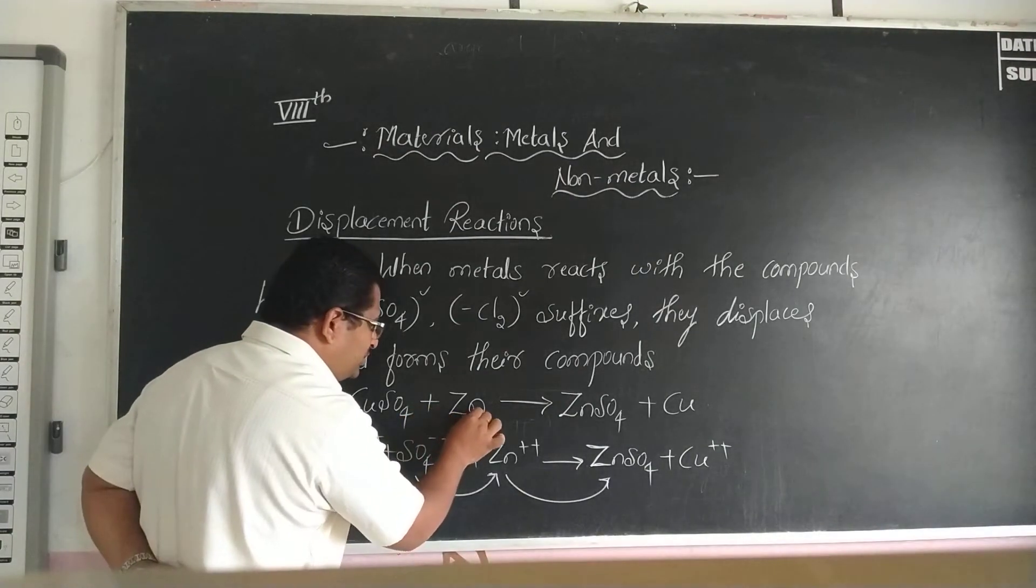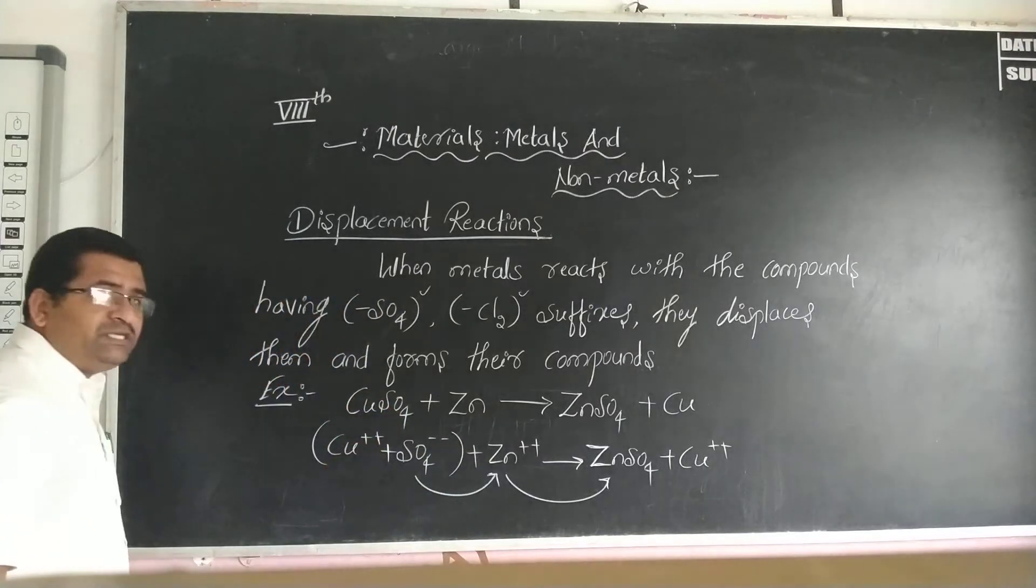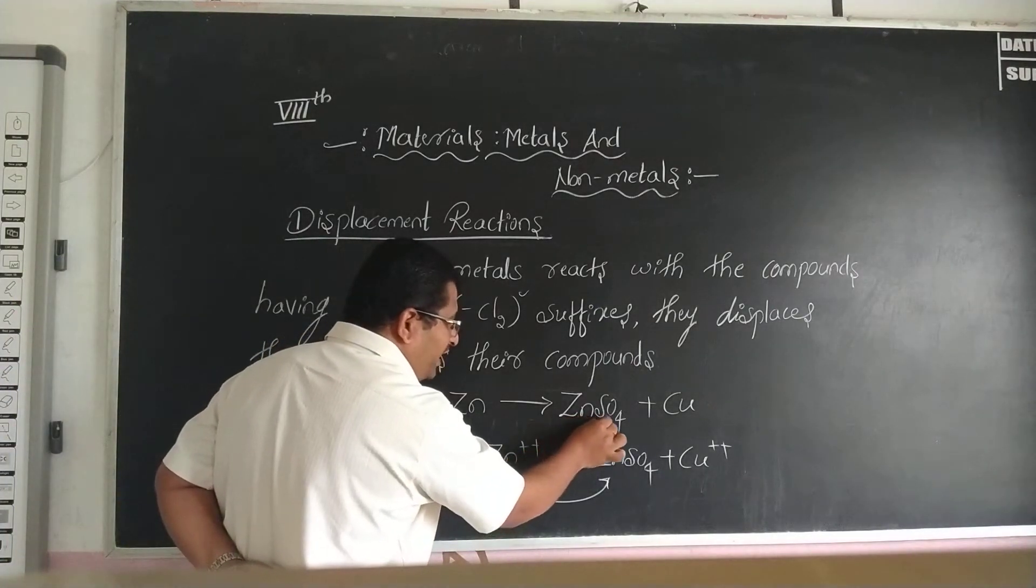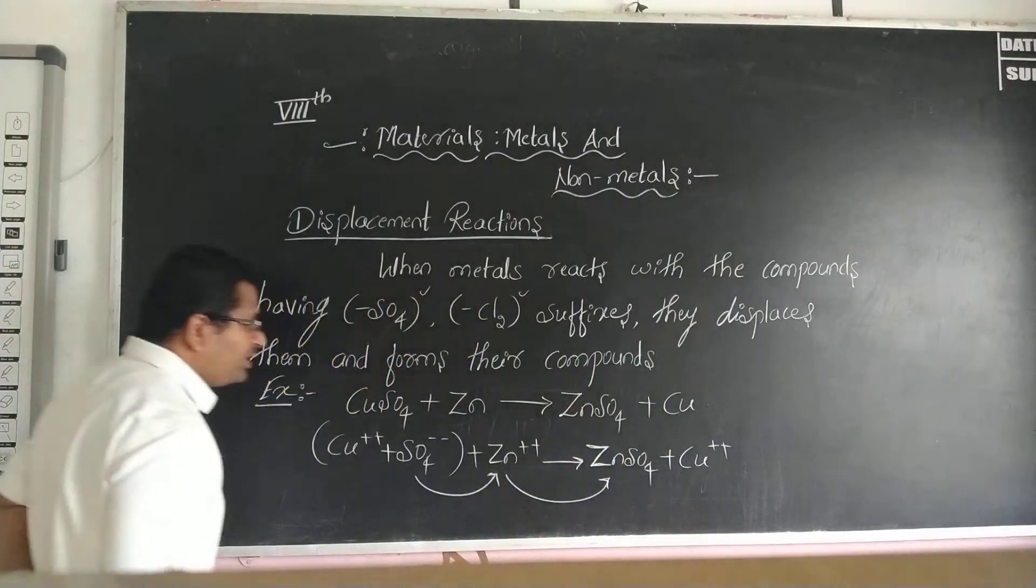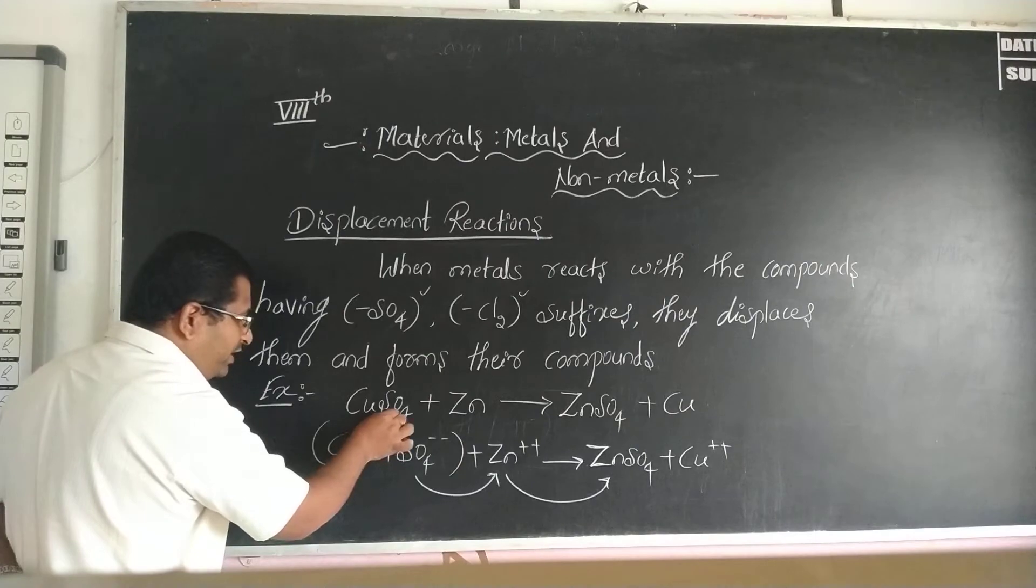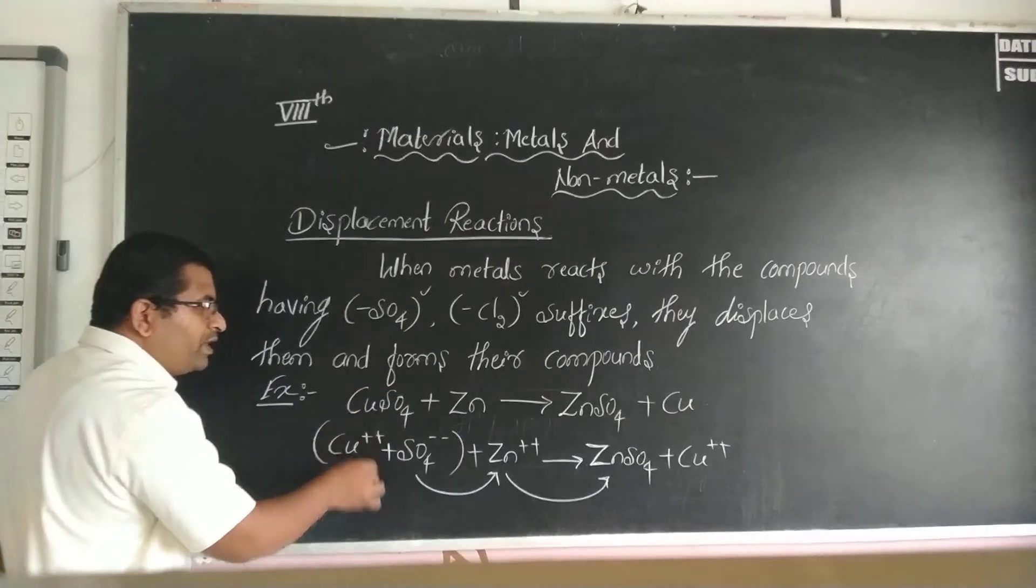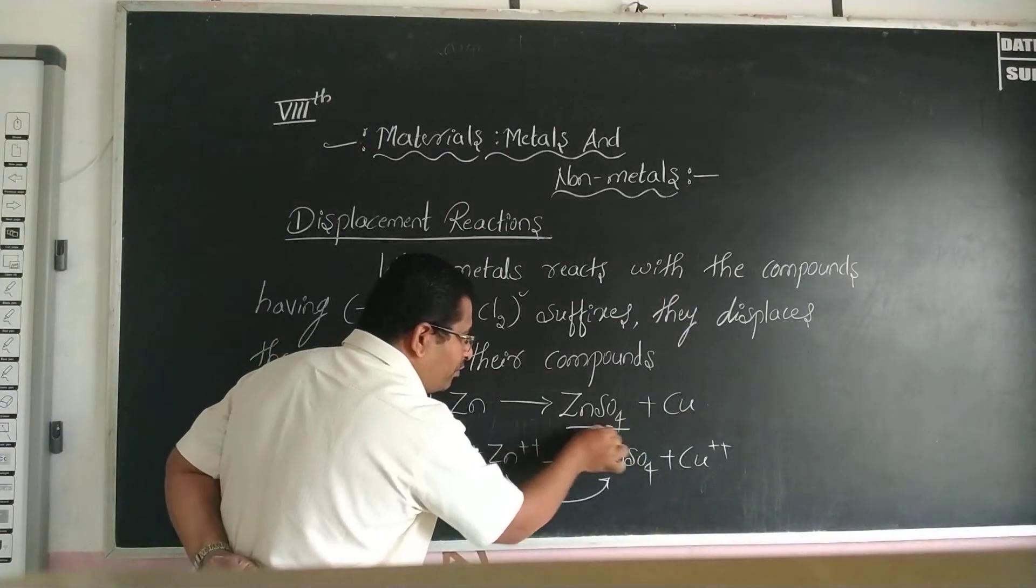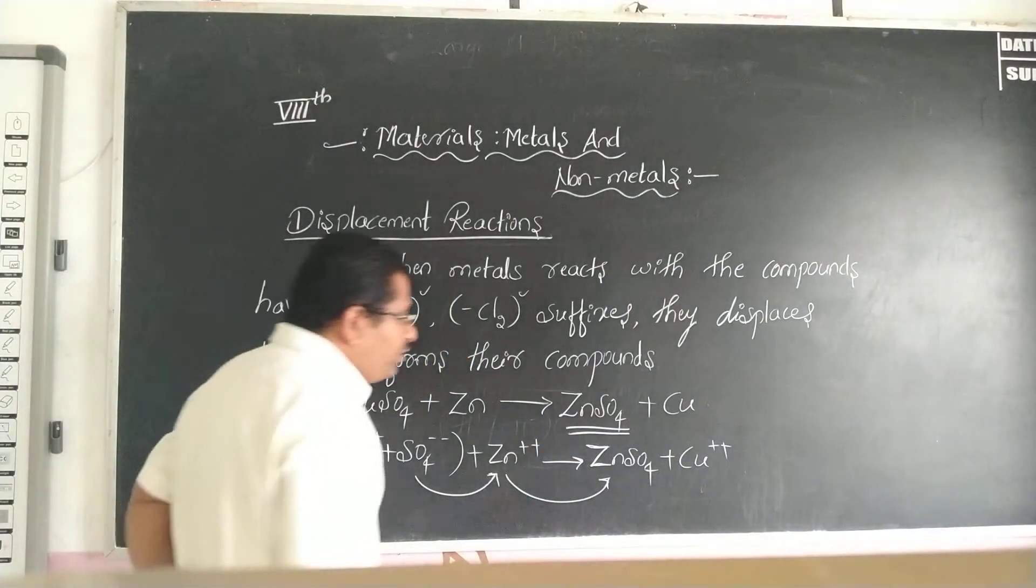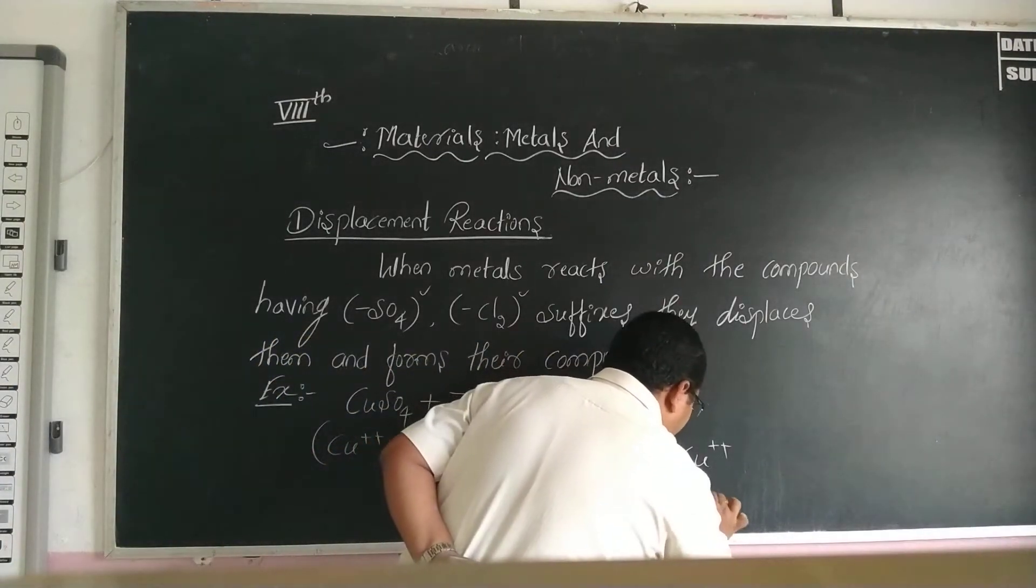When zinc metal reacts with CuSO4, it forms zinc sulfate ZnSO4 plus Cu. Here, zinc reacts with sulfate and displaces the sulfate group, forming its compound ZnSO4, and we get the copper metal.